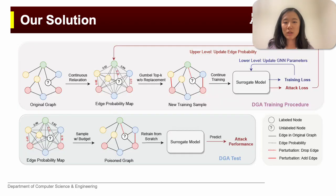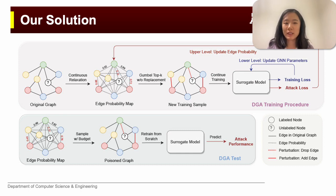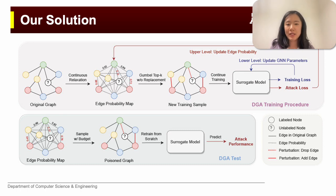To solve this problem, we relax the search space to a continuous space so that the graph structures can be optimized with respect to the attack objectives through gradient descent directly, allowing for fine-grained adjustments and improved attack effectiveness. We then simulate the lower-level optimization process with one-step fine-tuning on the surrogate model to avoid calculating the accumulation of metagradients and further reduce computation complexity.